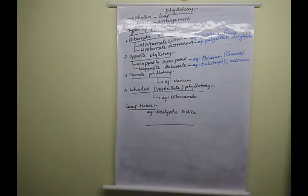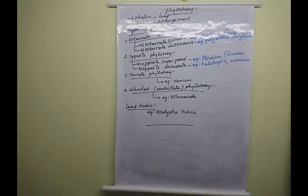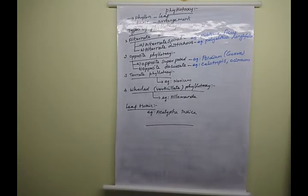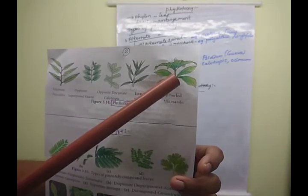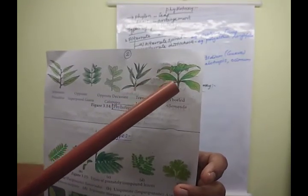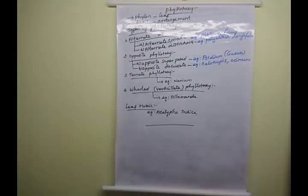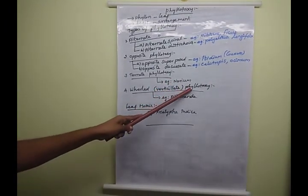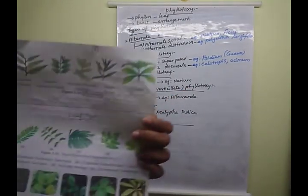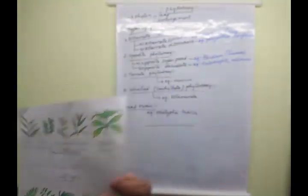The fourth type is whorled or verticillate phyllotaxy. Here, more than three leaves are present at each node, arranged in a circular manner. This is called whorled or verticillate phyllotaxy. Example: Allamanda, an ornamental flower. These are the four types of phyllotaxy.